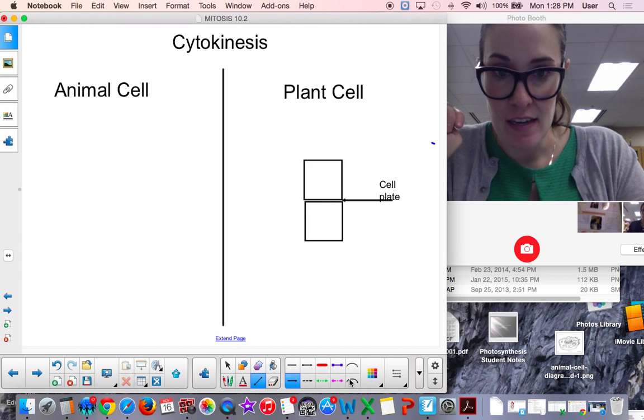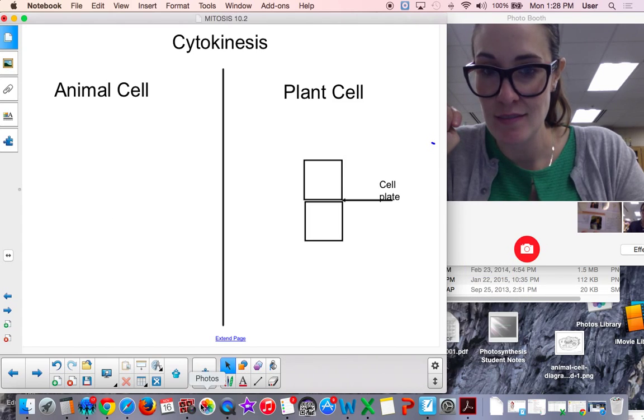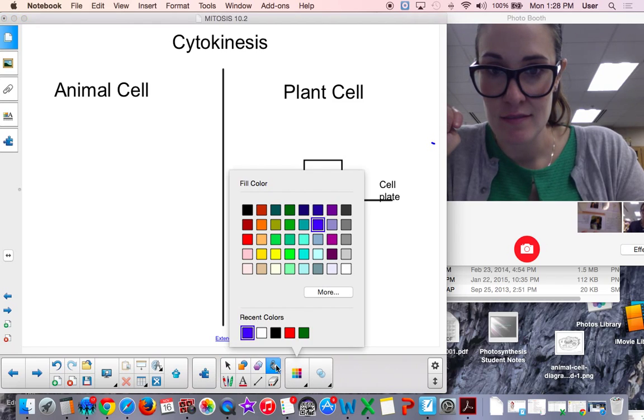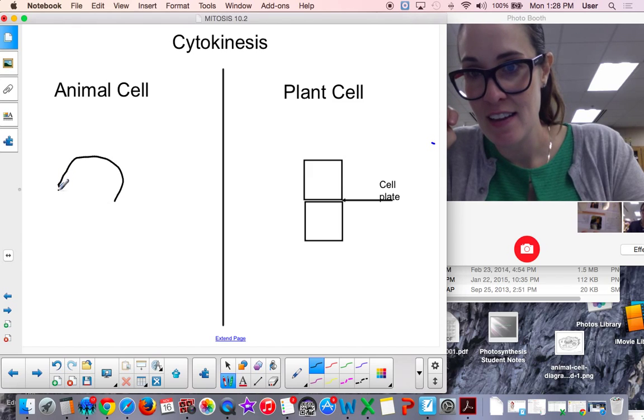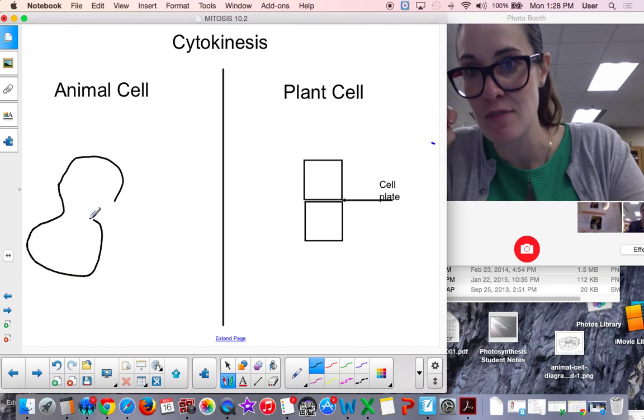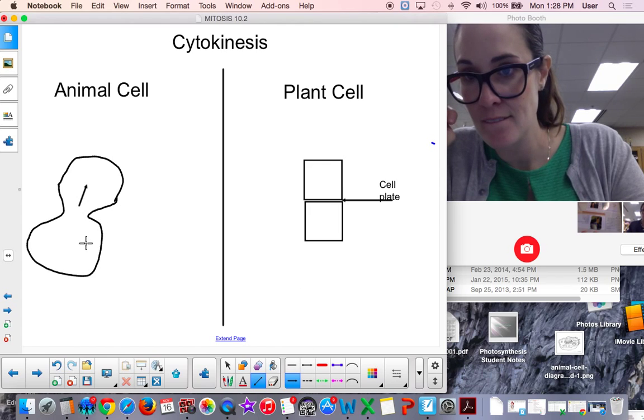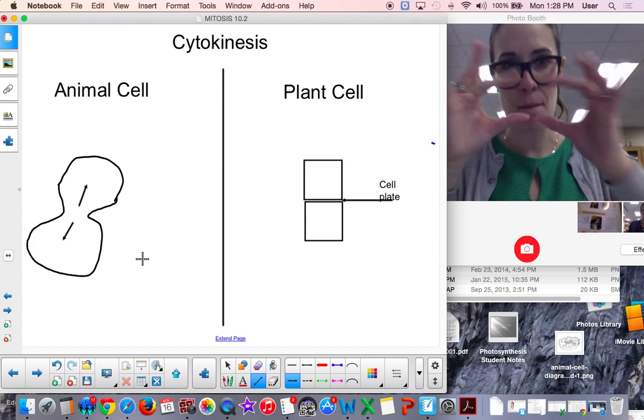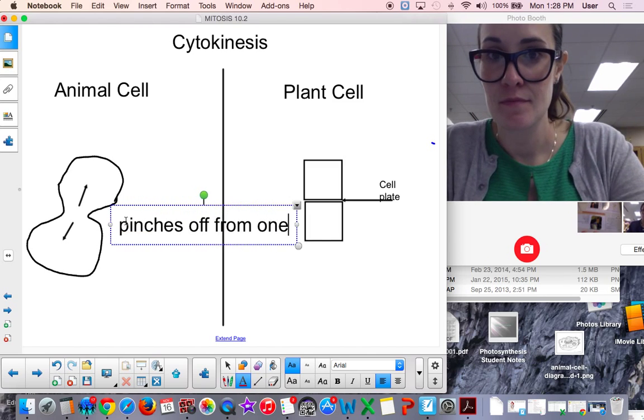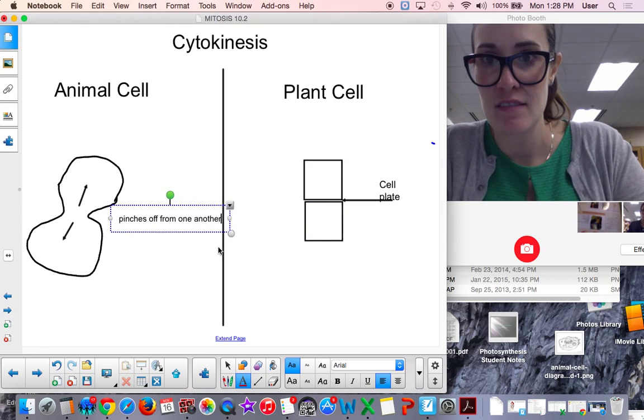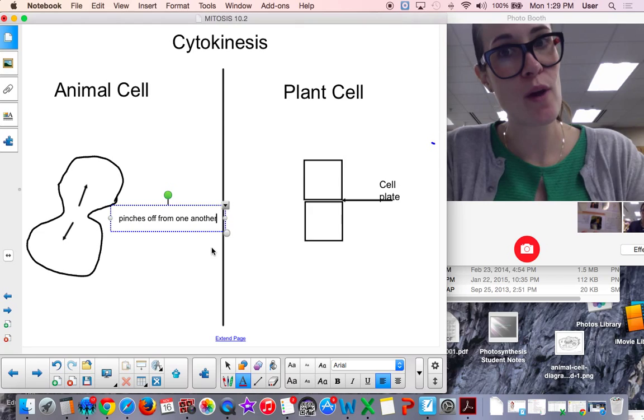Animal cells form. Remember the cleavage furrow and the pinching off of the cells? Draw two little arrows here. One this way, and one that way. The animal cell just pinches off from one another. Pinches off. It doesn't form a cell plate. The cells just pinches off from one another in that cleavage furrow. And that's the end of 10.2 notes.